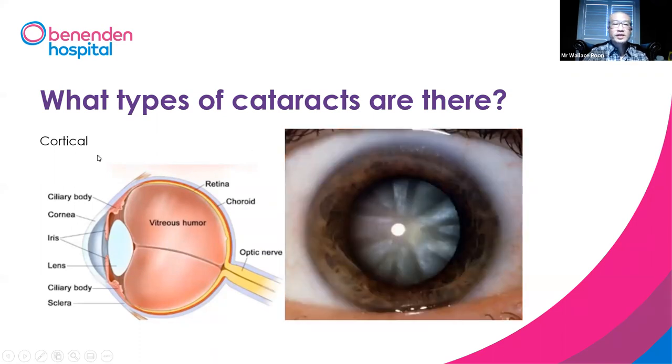This is cortical lens opacity. As you can see, there are white spokes on the superficial part of the cataract.